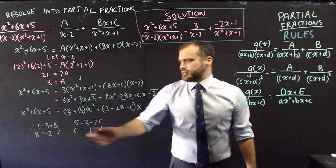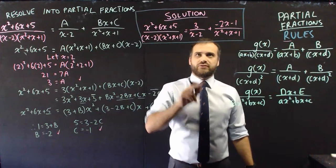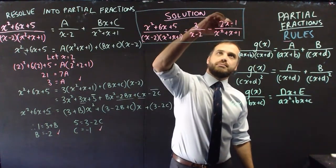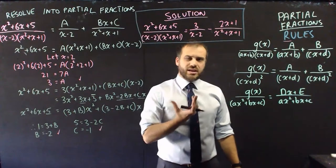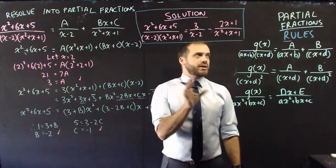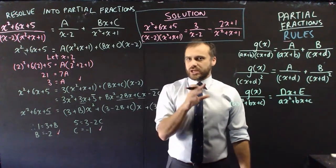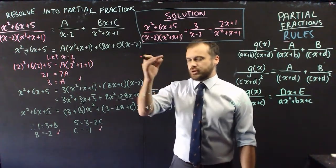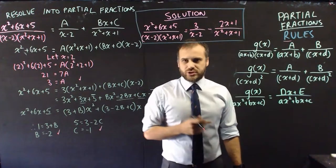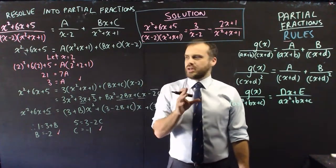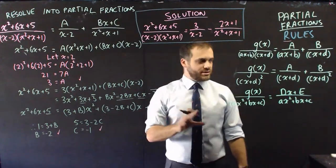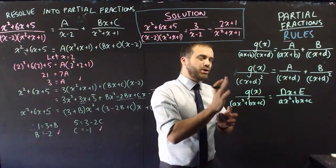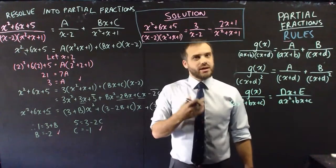So those are partial fractions for proper rational functions, where the numerator has a lower degree than the denominator. In a future video, we'll look at what happens when they're improper. Remember your rules, and remember that you can combine them when needed. And we are done.